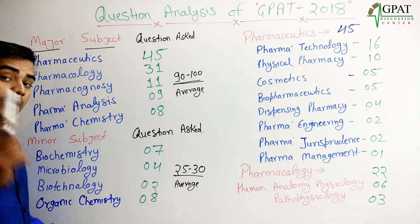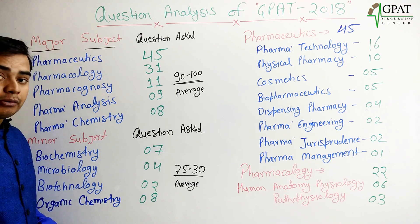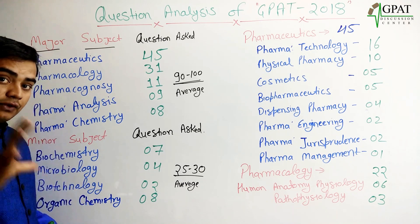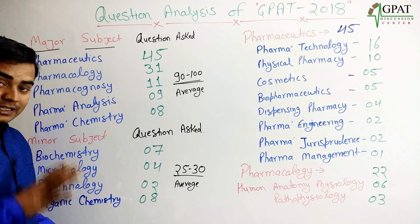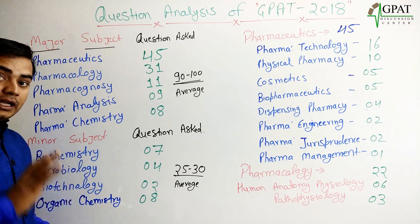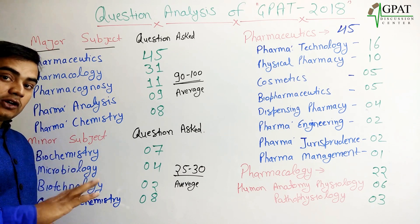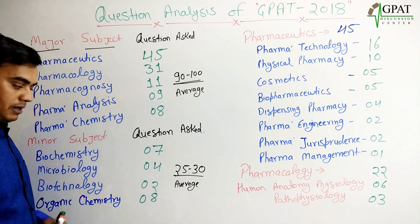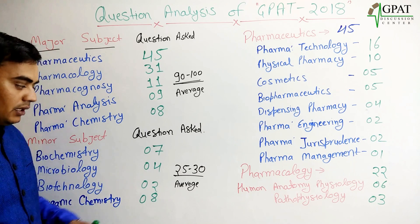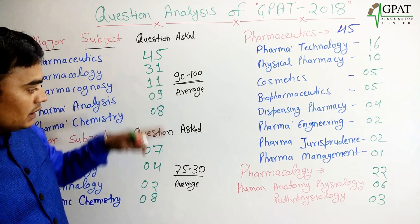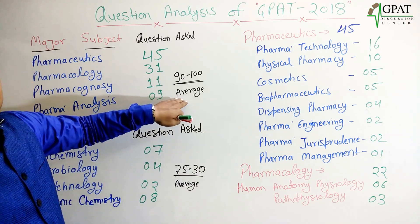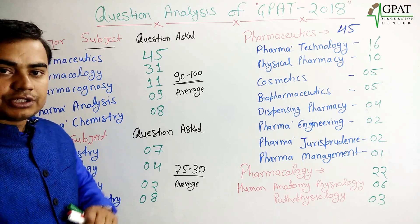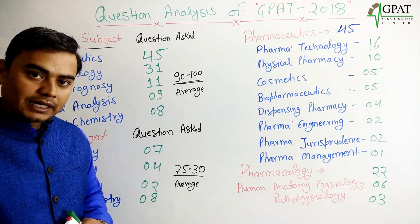Organic chemistry is very important — not just for the GPAT, but if you properly study organic chemistry, it will also help you in the NIPER exam. That is a major important topic. So approximately 90 to 100 questions from major subjects, and 25 to 30 questions from minor subjects.